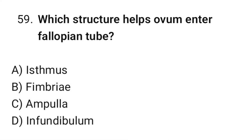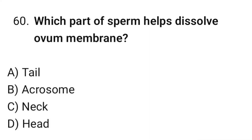Question No. 59: Which structure helps the ovum enter the fallopian tube? The correct option is B. Fimbriae. Question No. 60: Which part of sperm helps dissolve the ovum membrane? The correct option is B. Acrosome.